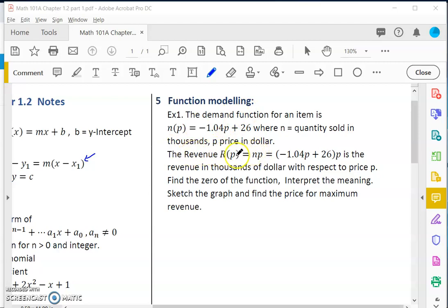So the revenue would be number of items sold times price. You would just multiply negative 1.04p plus 26 times p. This is the revenue that you will get if you set a price like this. We would find the zeros of the function, sketch the function, and also find the maximum revenue.